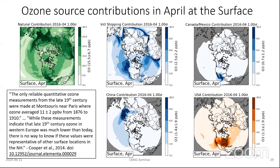A fun note: some of the only reliable pre-industrial observations we have are from near Paris in 1876. What you would hope is that our model's natural component would be consistent with the pre-industrial atmosphere as measured. Because we have so few measurements from that time period, one big question is whether those concentrations would be representative of the rest of North America. This plot shows we're actually doing pretty well where that pre-industrial observation would have been — and no, it is not representative of the rest of North America.